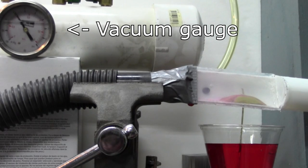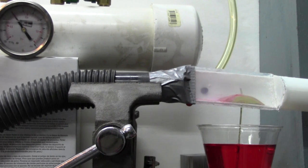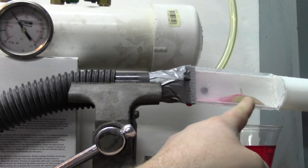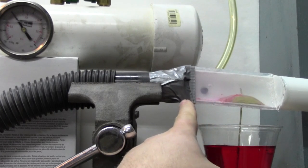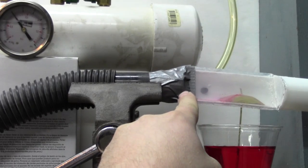Here we are, turning on the vacuum. You can see the needle on the vacuum gauge moving. You can also see the red liquid, which is water with red food coloring, moving up through the brass tube and atomizing within the air, moving through our makeshift venturi.